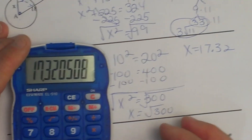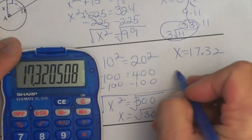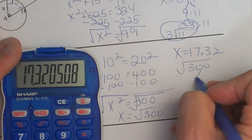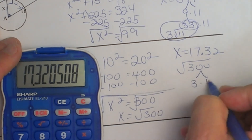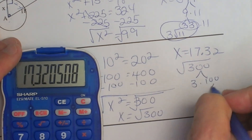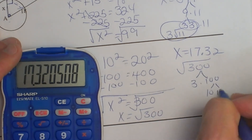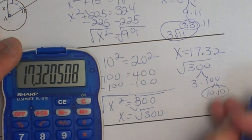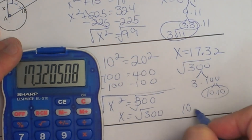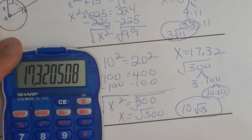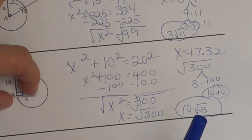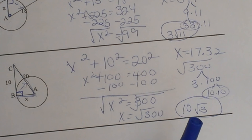Now let's get the radical answer. The square root of 300 breaks down to 3 times 100, and 100 is a perfect square whose square root is 10. So that is going to be 10 root 3 as the radical answer. That means my radius is 10 radical 3.